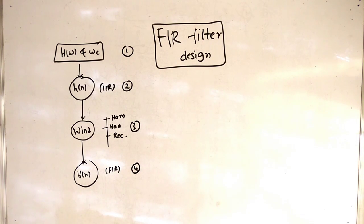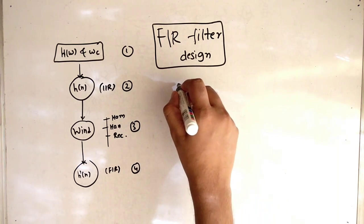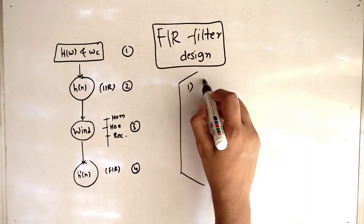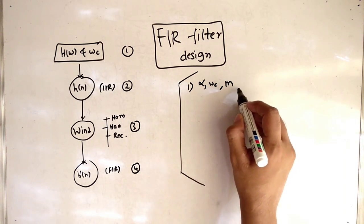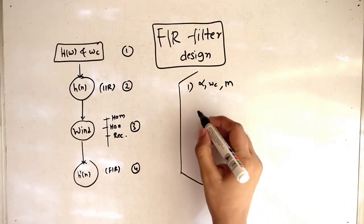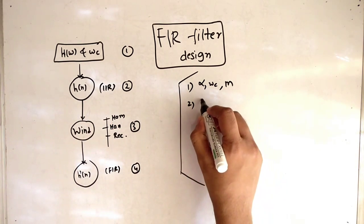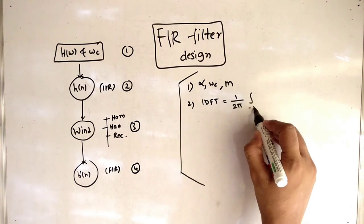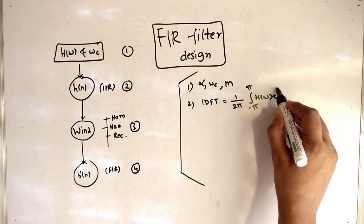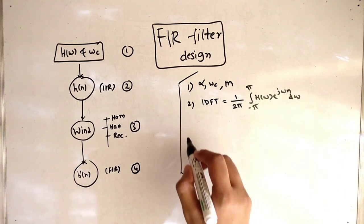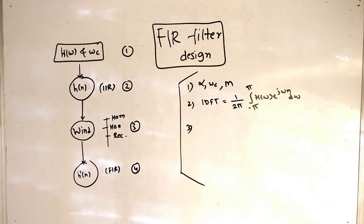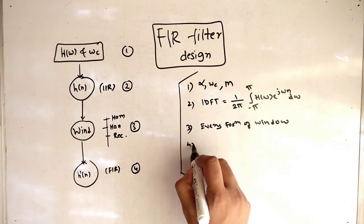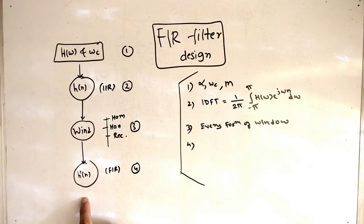Now the important parts: the first step requires alpha, cutoff frequency, and M — that's it, just these three parameters. The second point is to find H of N IIR; we need the IDFT formula, which is equal to 1 by 2 pi, integral minus pi to pi, H of Omega, E raised to J Omega N, D Omega. The third point is for the window — you should know every window formula.